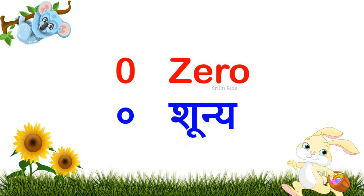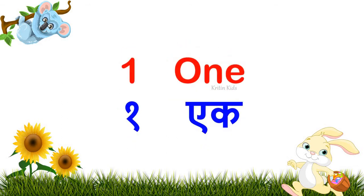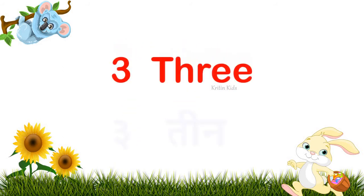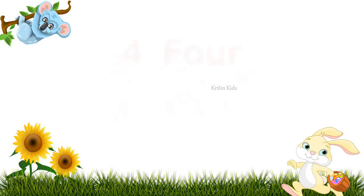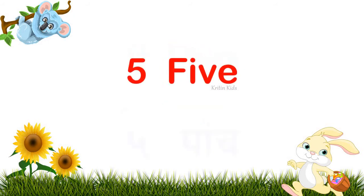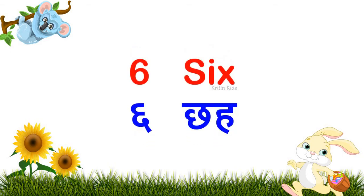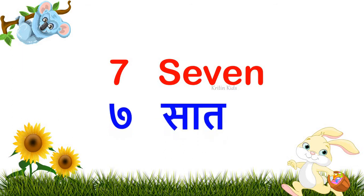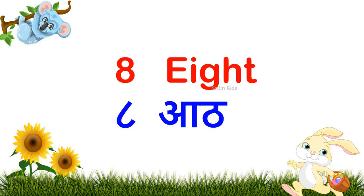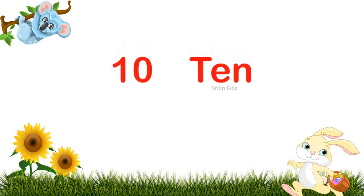Zero, Shunya. One, Ek. Two, Do. Three, Teen. Four, Chaar. Five, Paanch. Six, Chhe. Seven, Saath. Eight, Aat. Nine, Nau. Ten, Das.